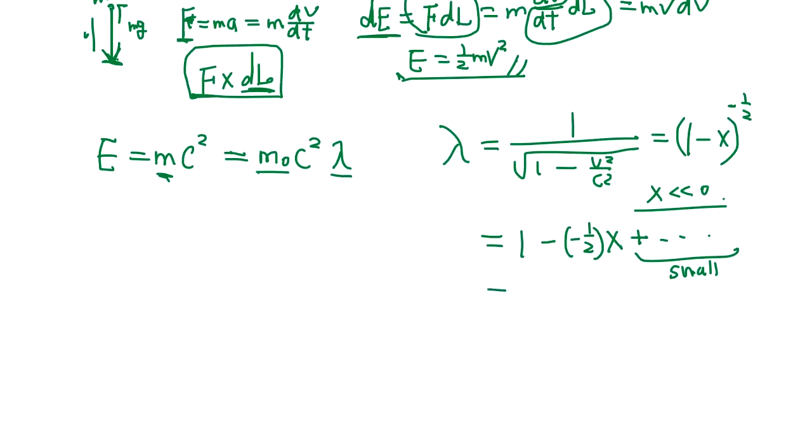What happens is it's going to be 1 plus v squared over c squared. So the approximation will be like that. So if you plug in this, minus c squared times 1 plus 1 over 2 v squared over c squared.